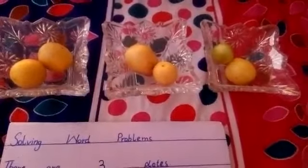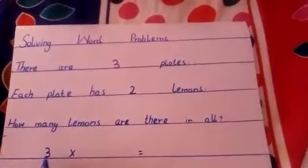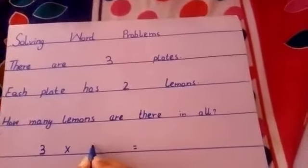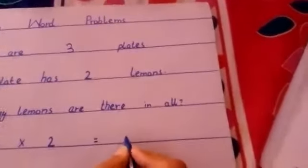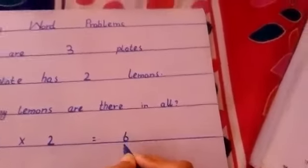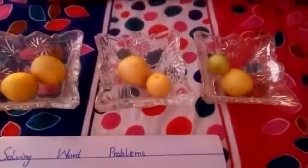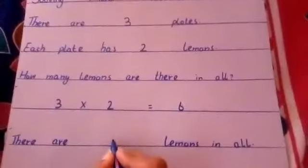Let's multiply. Three plates and each plate has two lemons — three twos. Any guesses? Six! Three twos are six. Now we have six lemons in all, just like this.